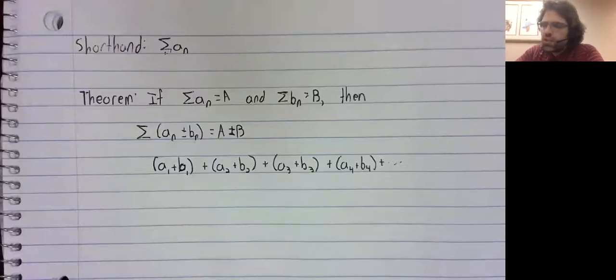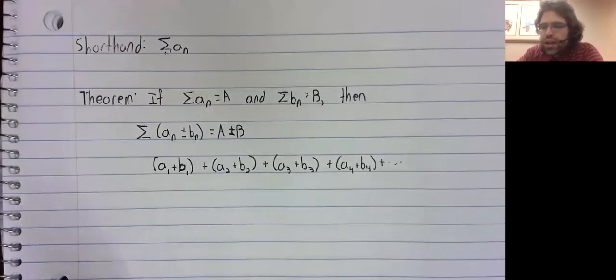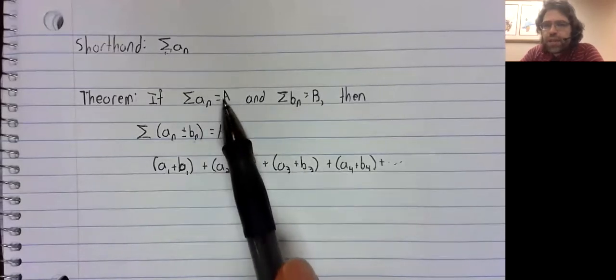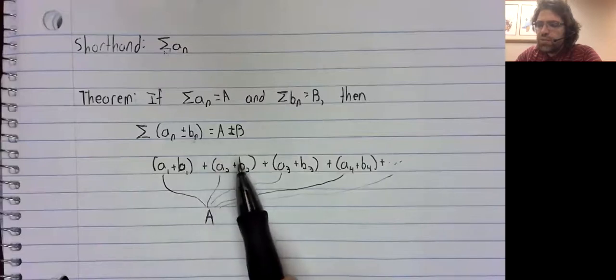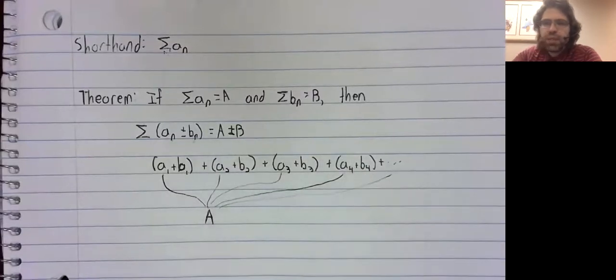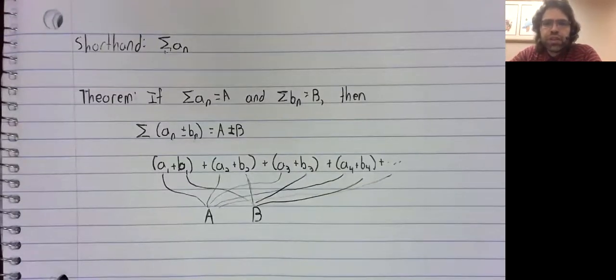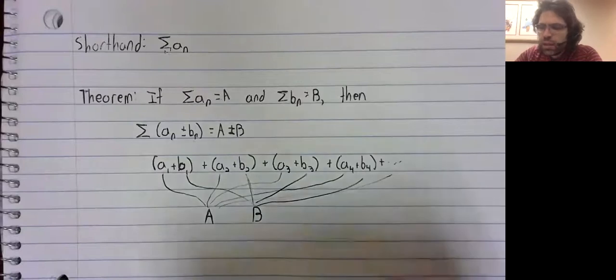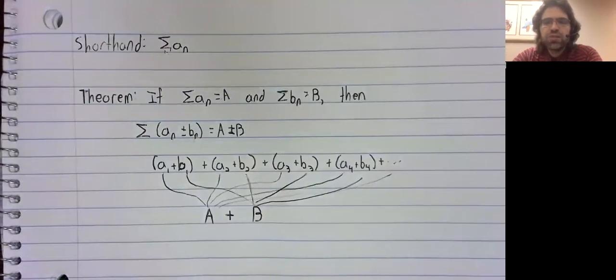It says, suppose we have an infinite series that looks like this, and these A's taken together give me capital A. And these B's taken together give me capital B. Then since we're adding everything together, and the A's give me A, and the B's give me B, taken together, this gives us A plus B. So it is intuitive.